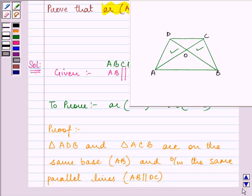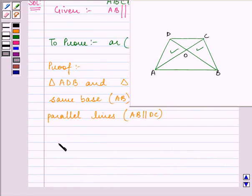So we can say that therefore area of these two triangles will be equal to each other, because triangles between the same base and between the same parallel lines are equal in area.